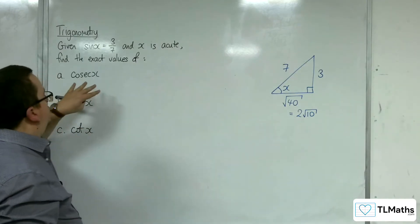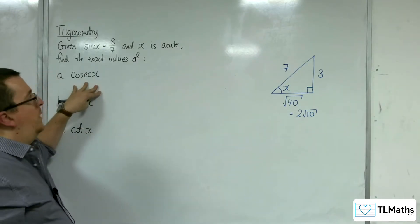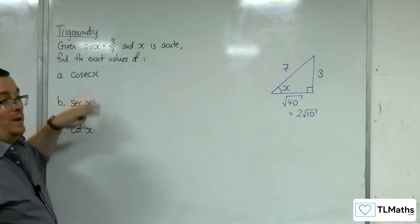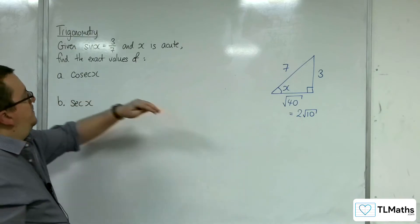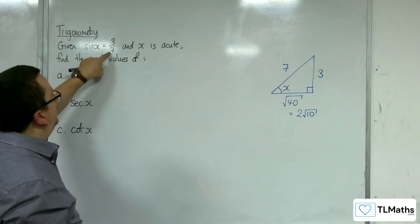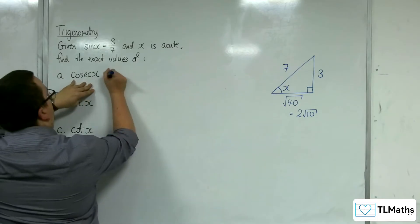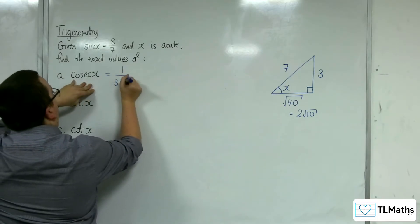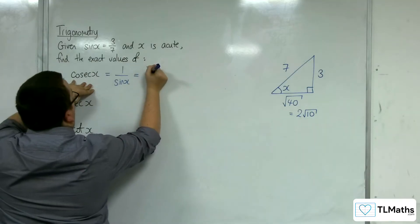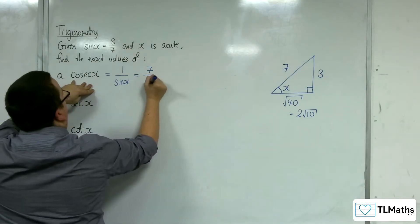If I'm being asked what is cosec, well, cosec I could have found without drawing the triangle, because sin x is 3/7. Cosec is 1 over sine, so it's the reciprocal of 3/7, which is 7/3.